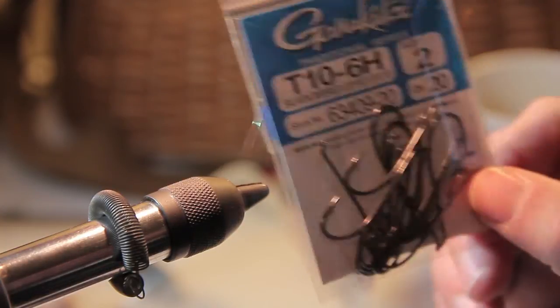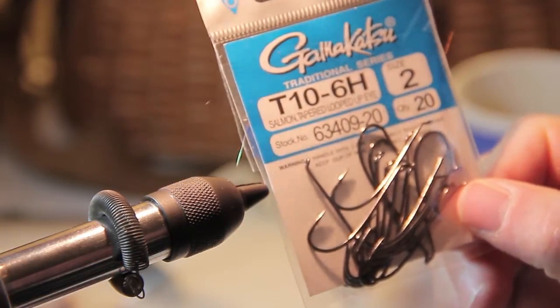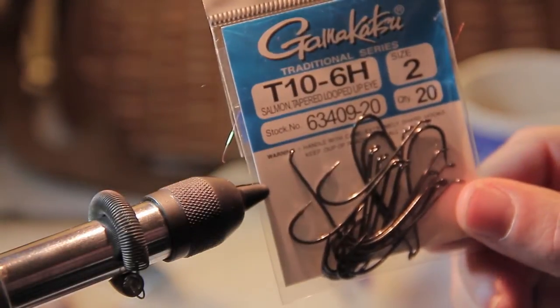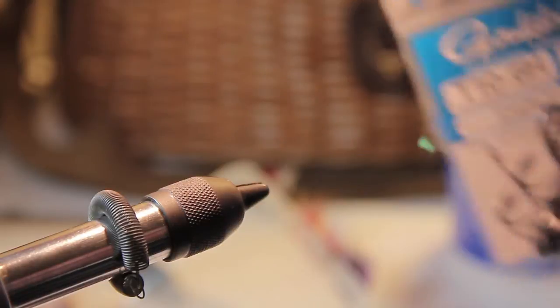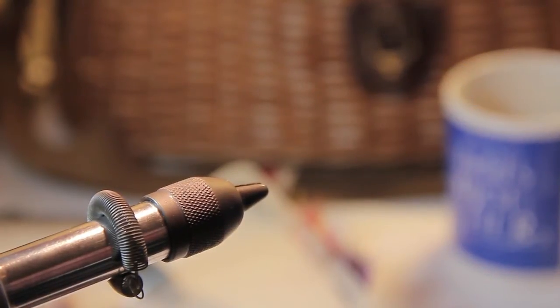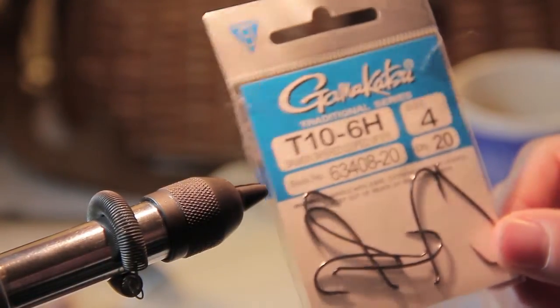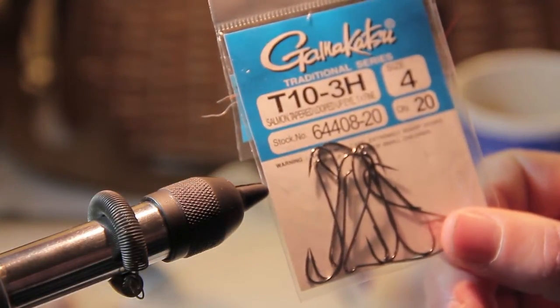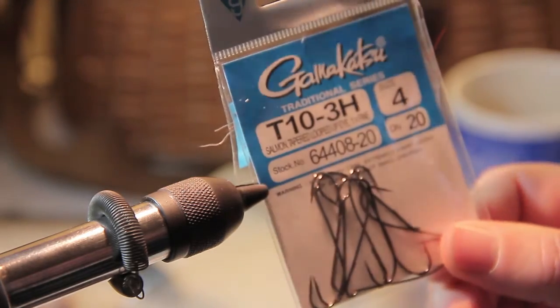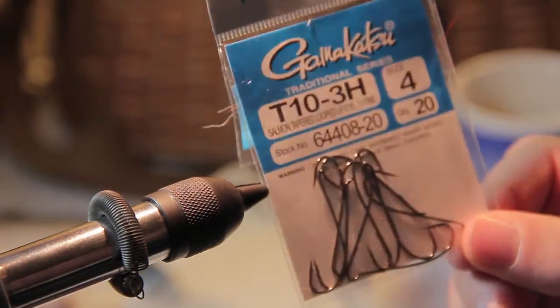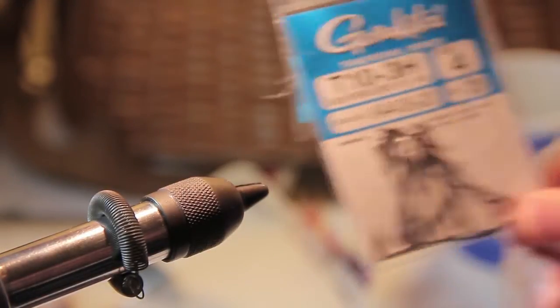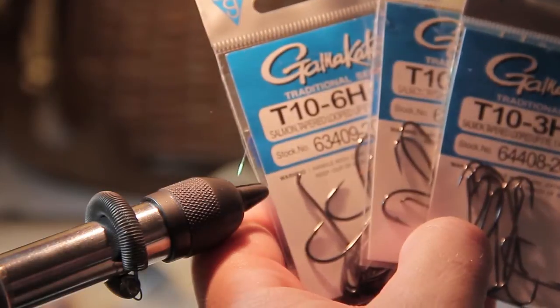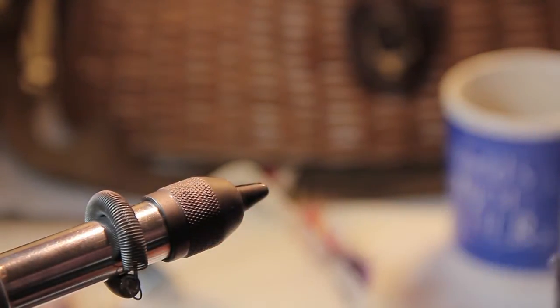Perhaps a larger hook like this Gamakatsu T10 6H, so a 6 heavy hook in a size 2. If the water is lower and clear, I might tie on a smaller hook, or go to an even lighter hook like this 3H in a size 4. Typically all of my steelhead fly fishing here in Oregon is on size 2s and 4s.